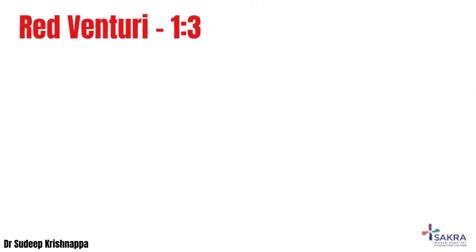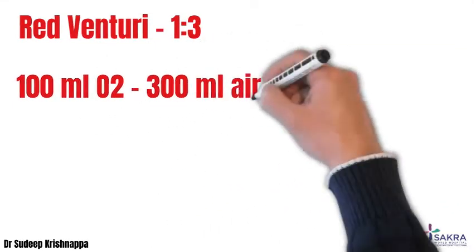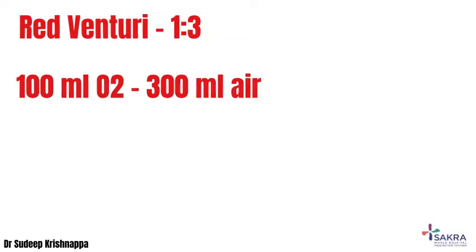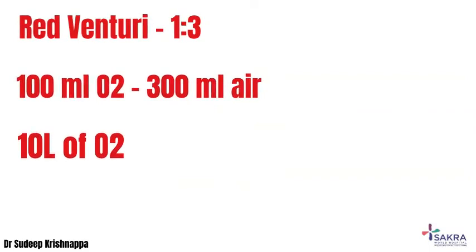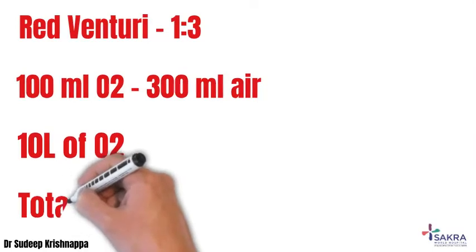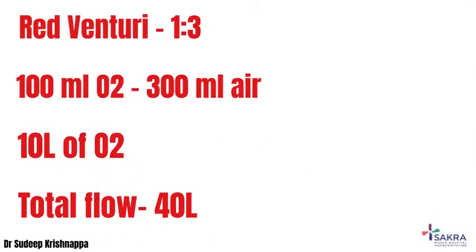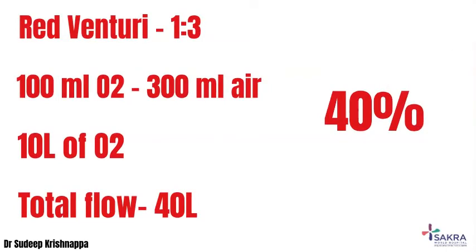The red venturi has an entrainment ratio of 1:3, meaning for each 100 ml of oxygen flowing through the device, 300 ml of room air would be entrained. With the recommended flow of 10 liters, entraining 30 liters of room air generates a total flow of around 40 liters. In the mixture, 100 ml of oxygen gives 100 ml of oxygen, and 300 ml of air gives 60 ml of oxygen — totaling 160 ml of oxygen in 400 ml, which translates to an FiO2 of 40 percent.